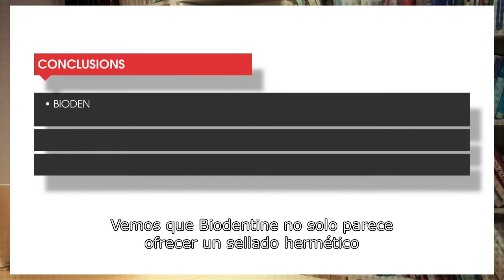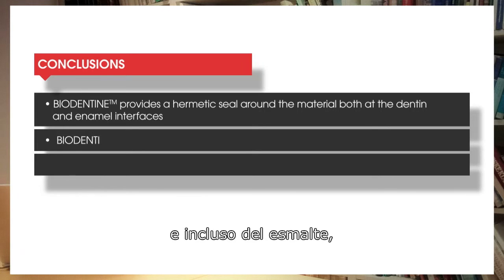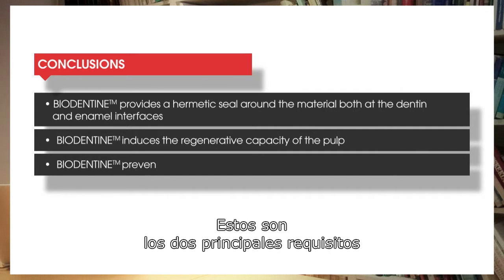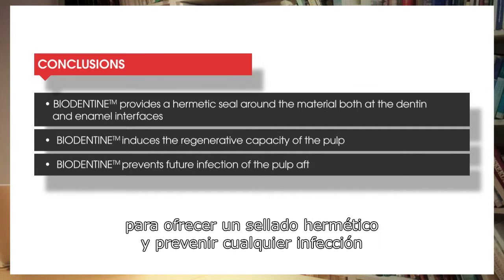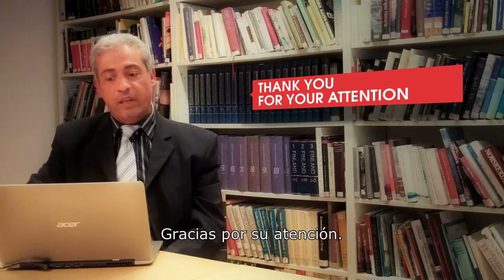In summary, Biodentine appears not only to provide a hermetic seal around the material and at the dentin and enamel interfaces, but also to induce the regenerative capacity of the pulp. These are the two major requirements — providing a hermetic seal and preventing any future infection of the pulp after the initial restoration. Thank you for your attention.